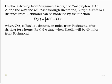Estella is driving from Savannah, Georgia to Washington, DC. Along the way, she will pass through Richmond, Virginia. Estella's distance from Richmond can be modeled by the function d of t equals the absolute value of 460 minus 60t, where d of t is Estella's distance in miles from Richmond after driving for t hours. Find the time when Estella will be 40 miles from Richmond.